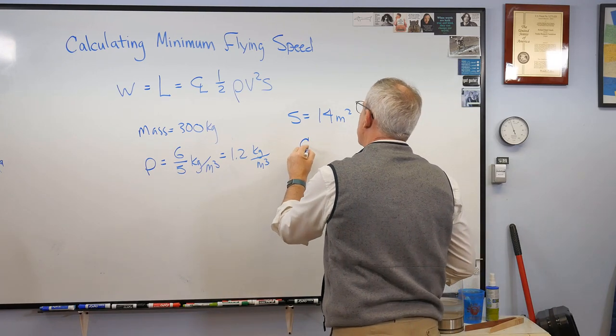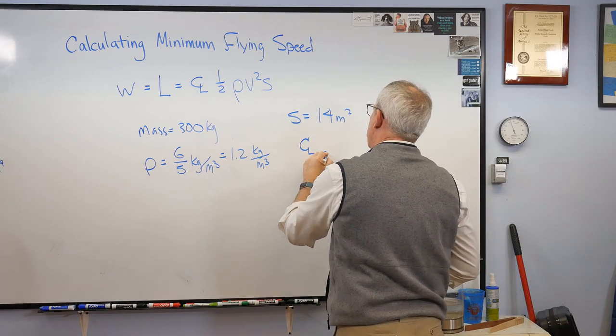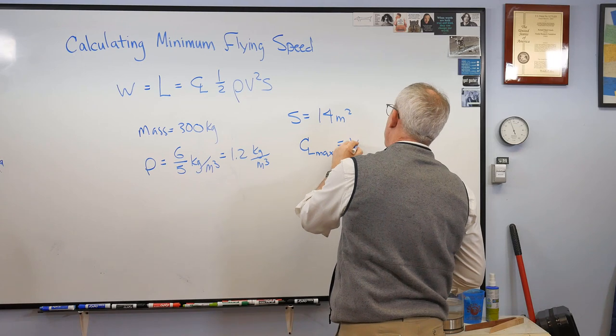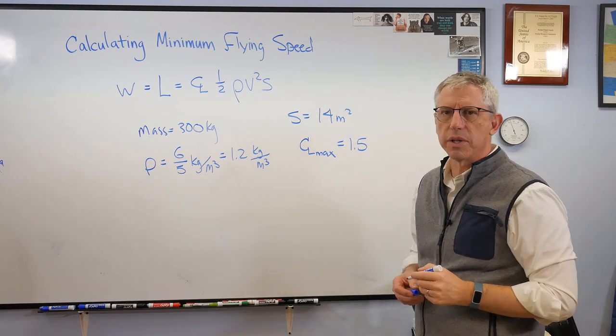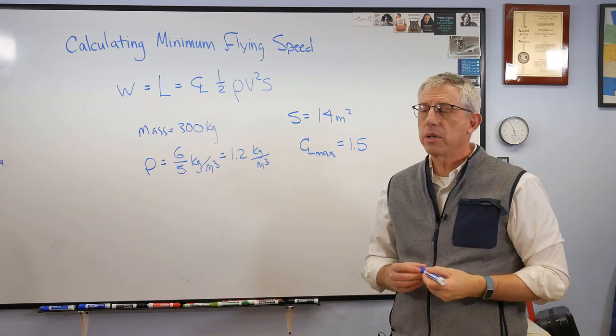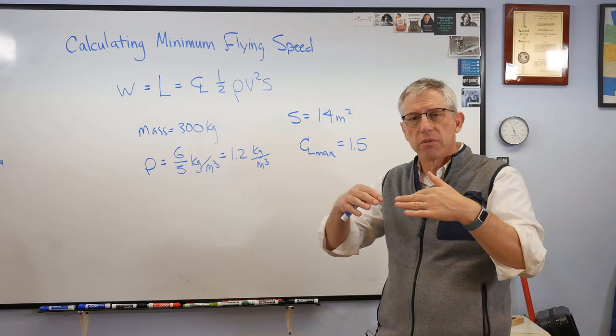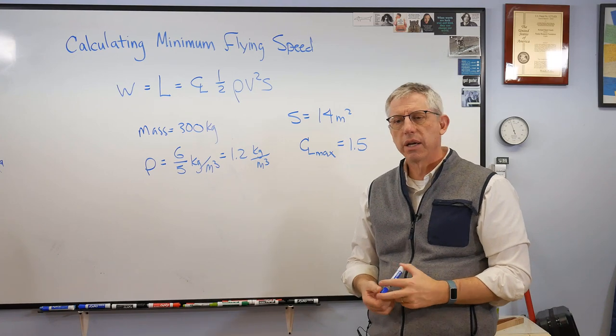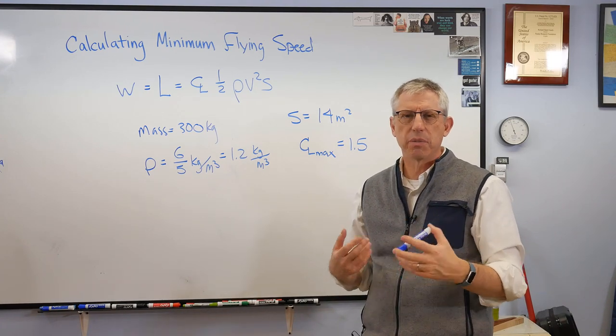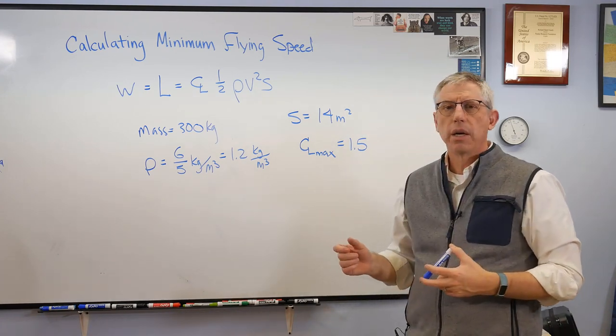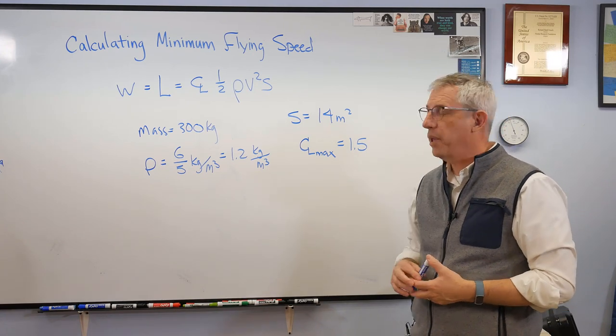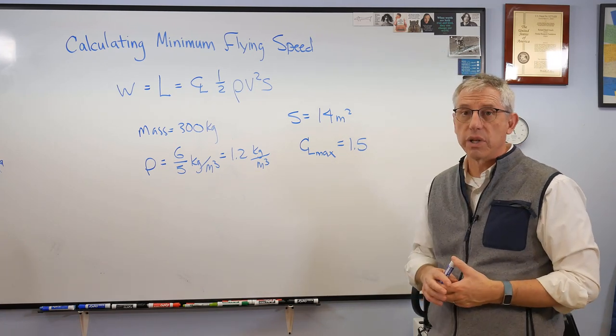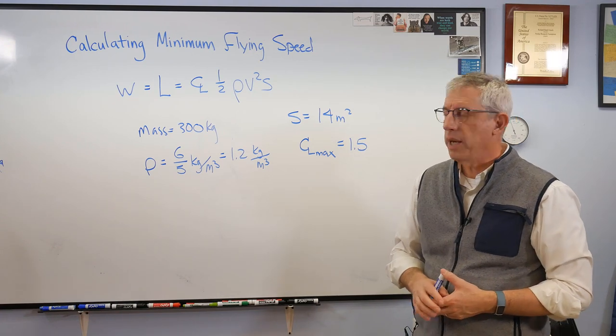Well, it depends on the configuration of the wing, but the CL max of about 1.5, that's about as high as you could reasonably get. Now you can make some modifications to the wing by adding leading edge, they're called slats, these extra lifting surfaces at the leading edge or flaps at the trailing edge. You can do some things like that to increase this. But for a simple wing like the one on my plane over there, that's about as high as you can reasonably get.